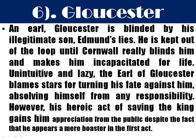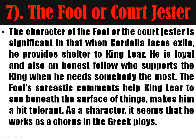Gloucester is blinded by his illegitimate son Edmund, who lied against the legitimate son Edgar. He is kept out of the loop, and the blinding leaves him incapacitated for life. Gloucester is also a somewhat naive character in the sense that he paid much attention to what Edmund told him rather than investigating whether Edgar actually did what Edmund claimed about him.